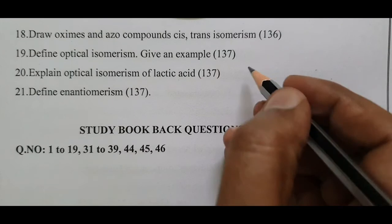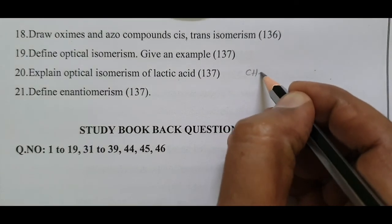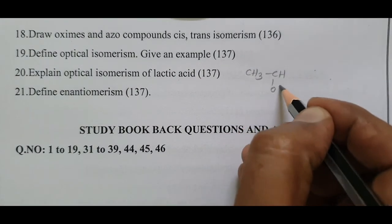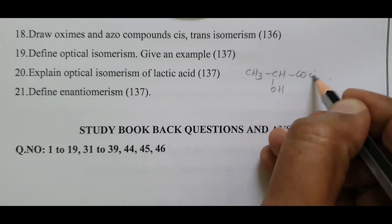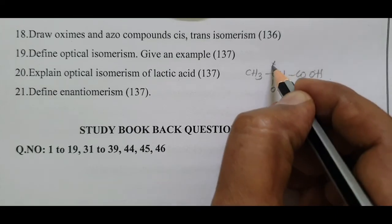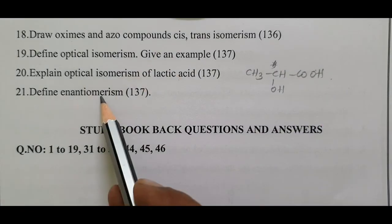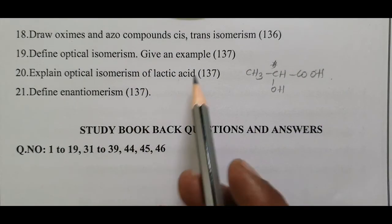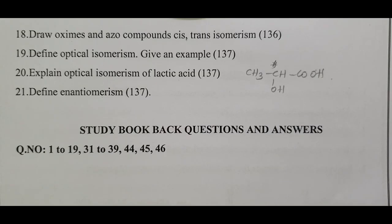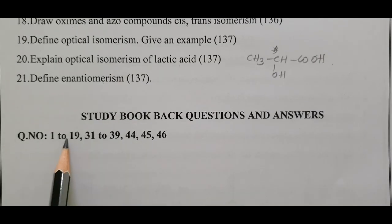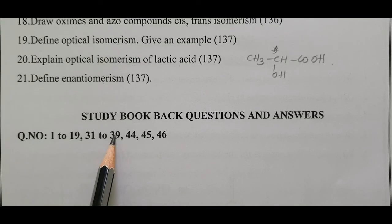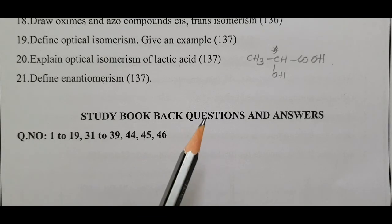Note: Cis-trans isomerism. The center carbon, chiral carbon - this is optical isomers. Define enantiomers, page 137. Book pack questions: question numbers 1 to 19, 31 to 39, 44, 45, 46.